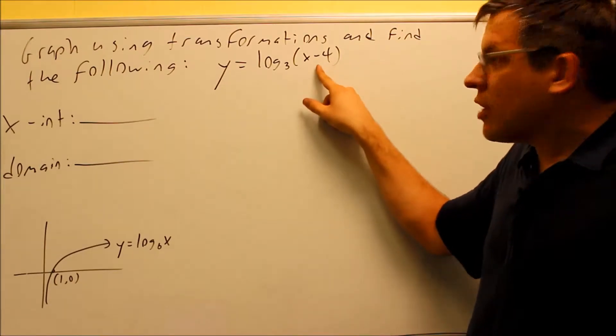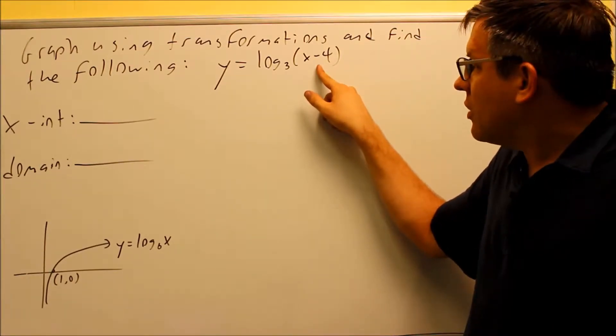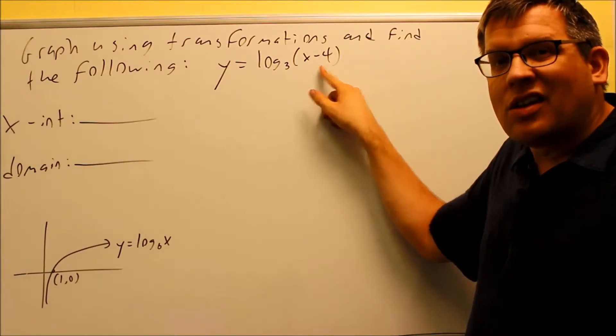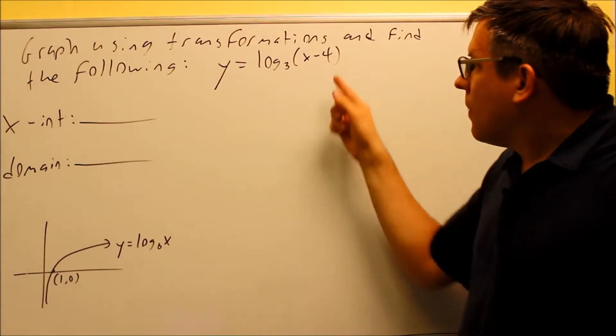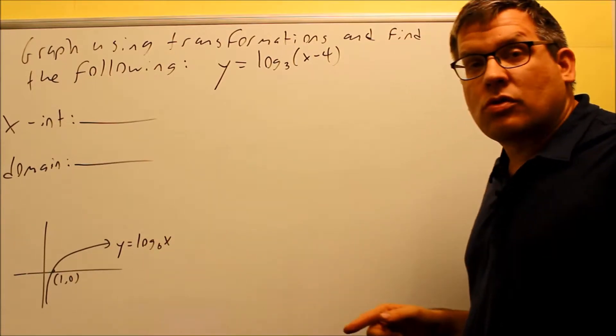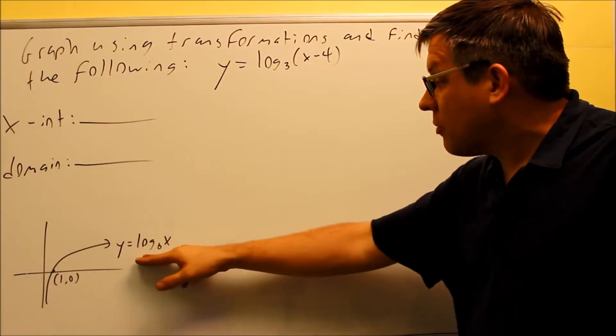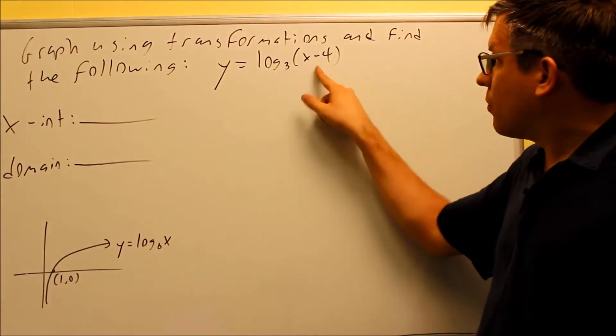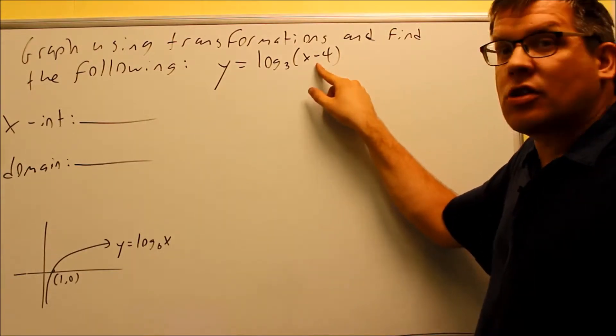All we're doing here is we got a transformation on the inside. So anytime you have something on the inside, that affects your left and right movement. The minus 4 here will tell us that we're going to move the base graph, the y equals log base b of x, that graph, we're going to move four places opposite direction of this sign here.